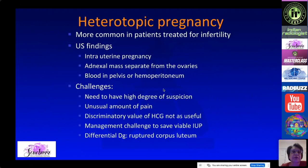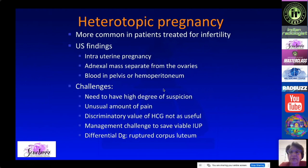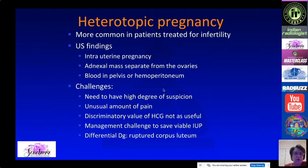Heterotopic pregnancy — having both an intrauterine pregnancy and an ectopic pregnancy simultaneously — is more common in patients treated for infertility. The challenge is that when you see an intrauterine pregnancy, you may be reassured, but in these cases you must look further. You will see not only an intrauterine pregnancy but also an adnexal mass separate from the ovary. Always look for blood in the pelvis or hemoperitoneum, and maintain a high index of suspicion in any pregnant patient with pelvic blood or unusual pain.